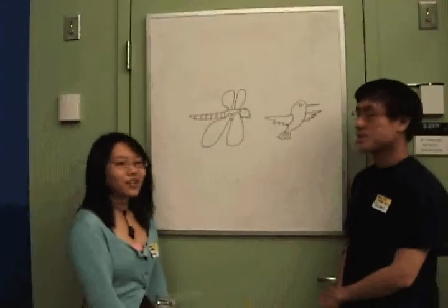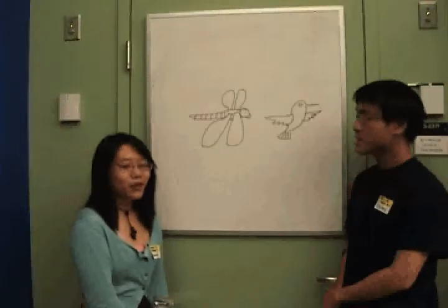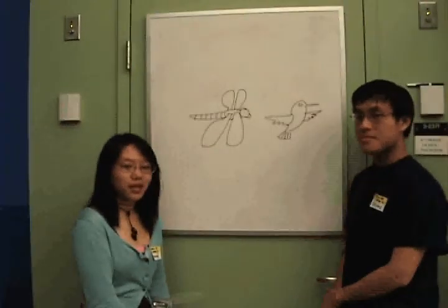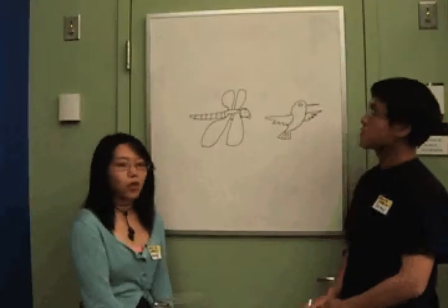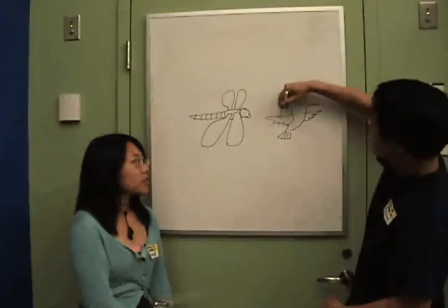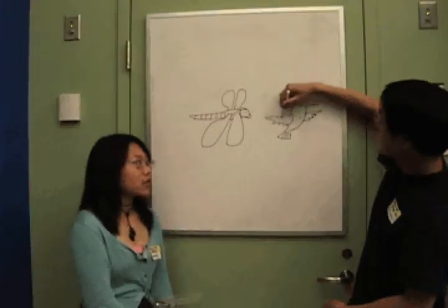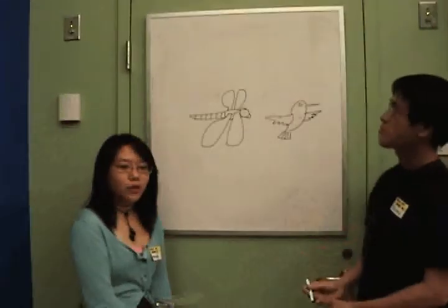So here we have a dragonfly and a hummingbird. Both are very good hovers, but they hover in a slightly different way. The hummingbird, when it hovers, hovers by moving its wings along a horizontal axis. This is the way most insects hover, and it's also more like the way a helicopter hovers as well.